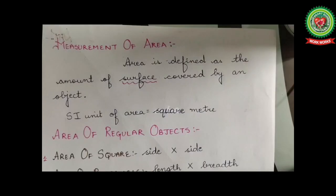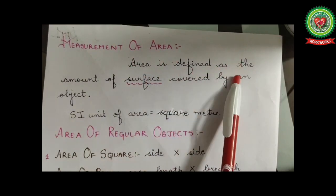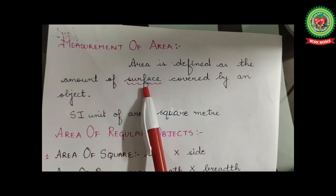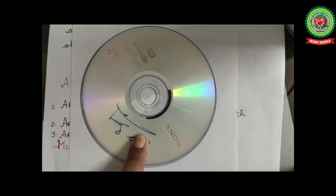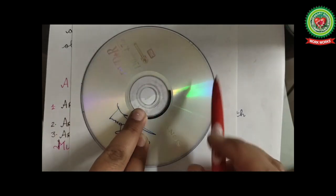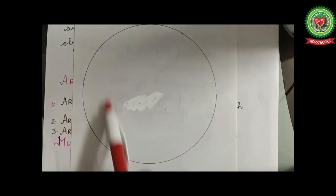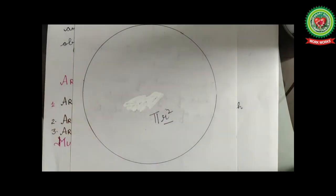Our next topic is measurement of area. Area is defined as the amount of surface covered by an object. Suppose I want to measure the area of a disk — I will make an outline of this disk on a white sheet of paper. Then I will find the area of this circle by the formula pi r squared, where r is the radius of the circle. In this way I will know what is the area of the disc.